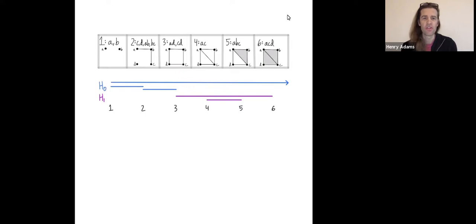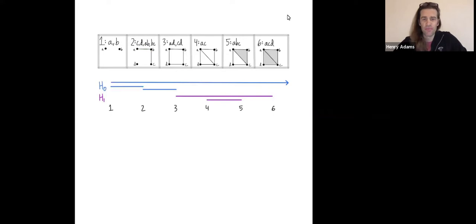The zero dimensional barcodes encode connected components. At stage one, we have two connected components that are born. One connected component corresponding to A is going to live forever. The connected component corresponding to B joins up and dies at stage two, but at stage two a new connected component is born. It lasts until stage three where it joins up. Looking at one dimensional holes, the first one dimensional hole is born at stage three and persists until stage six when it is filled in.